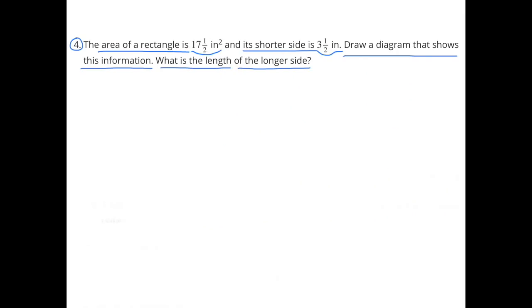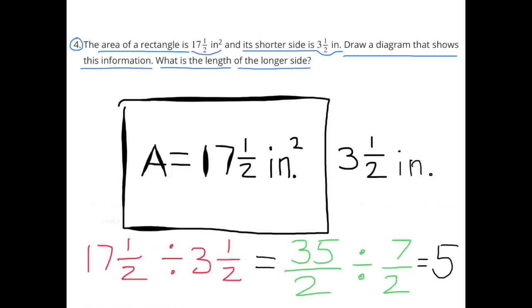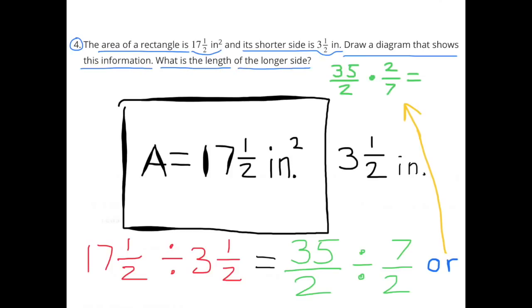Number 4: The area of a rectangle is 17 and a half inches squared and its shorter side is 3 and a half inches. Draw a diagram that shows this information. The inside represents the area, 17 and a half inches squared, and the shorter side is 3 and a half inches. 17 and a half divided by 3 and a half is the same as 35 halves divided by 7 halves, which equals 5. That was easy because the common denominators were the same — 35 divided by 7 is 5. Or we could do 35 halves times 2 over 7, which also equals 5. The longer side length is 5 inches.